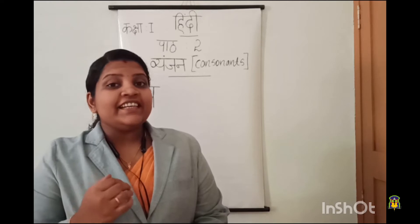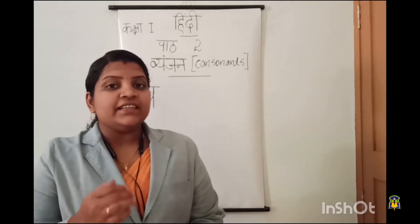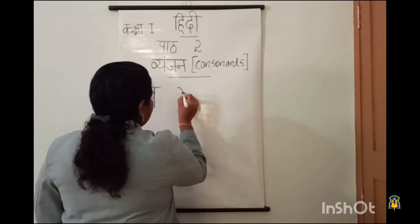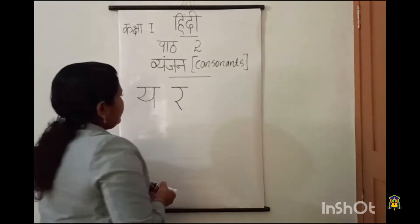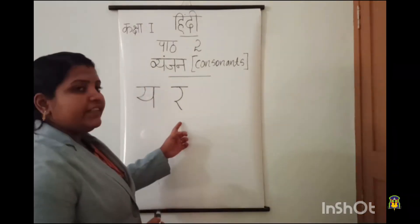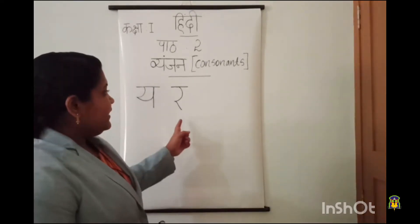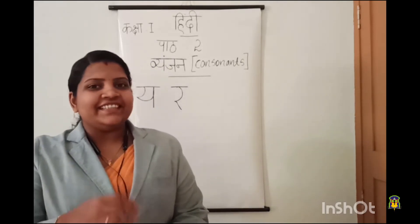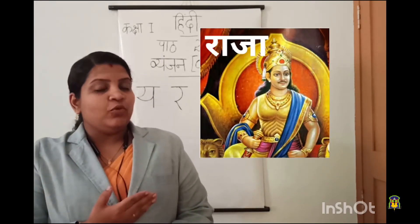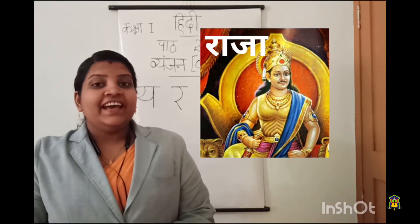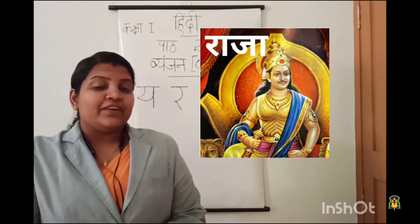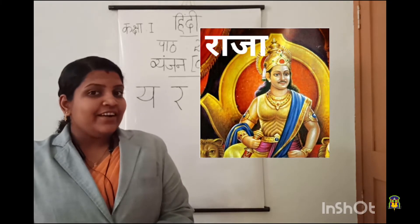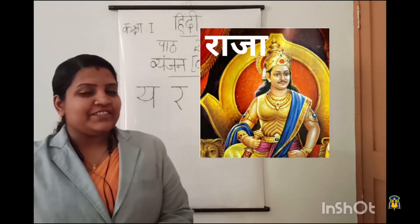Say with me: ra. One more time louder: ra. So let me write the letter. This is letter ra. Say louder: ra. Then next we are going to learn a word starting with letter ra. What is this? Yes, it is 'raja'. One more time, say louder: raja. And which is the first letter of raja? Ra is the first letter of raja.